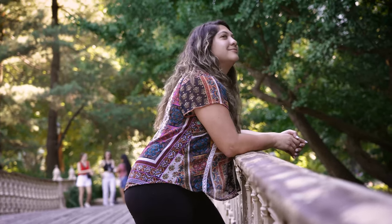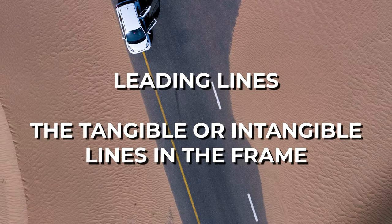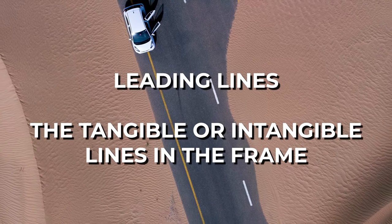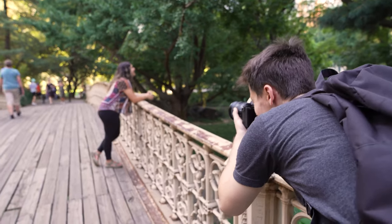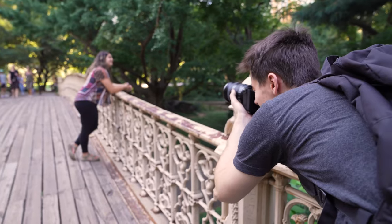Another great tool to make your video look more cinematic is leading lines. Leading lines are the tangible or intangible lines in the frame created by things like roads, buildings, signs, arrows, or light in the background that lead the viewer's eye in a particular direction. If you're using these effectively, your audience might not even be aware of them, but they're a very subtle yet powerful way to direct the focus of your viewer.